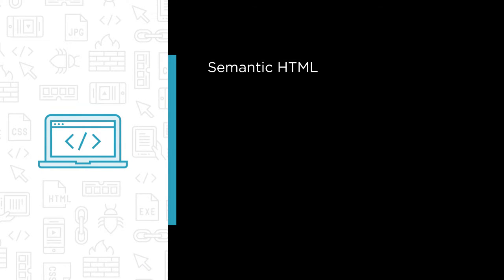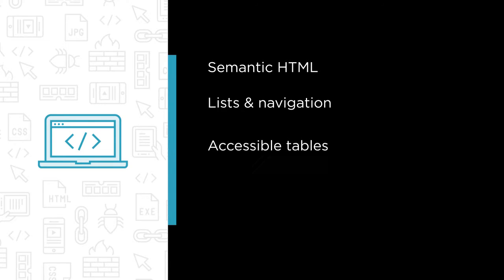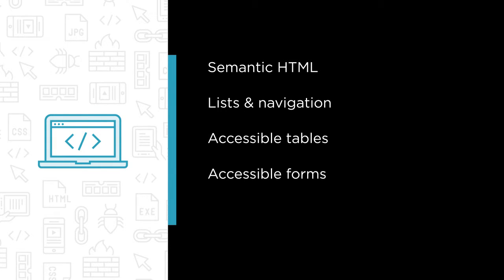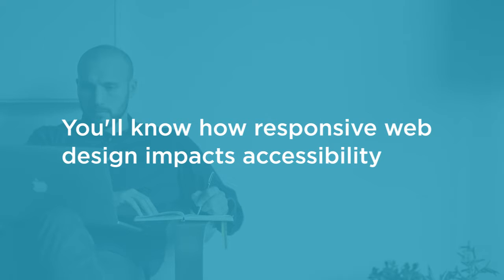I'll adequately discuss semantic HTML, the basis for all accessibility, by demonstrating proper document sectioning, hierarchy, and structure, lists, navigation, accessible tables, accessible forms, and accessible media including images and videos. I'll round out the course by talking about responsive web design and its impact on accessibility. All along the way I'll use a live screen reader to demonstrate the before and after of each recommendation.